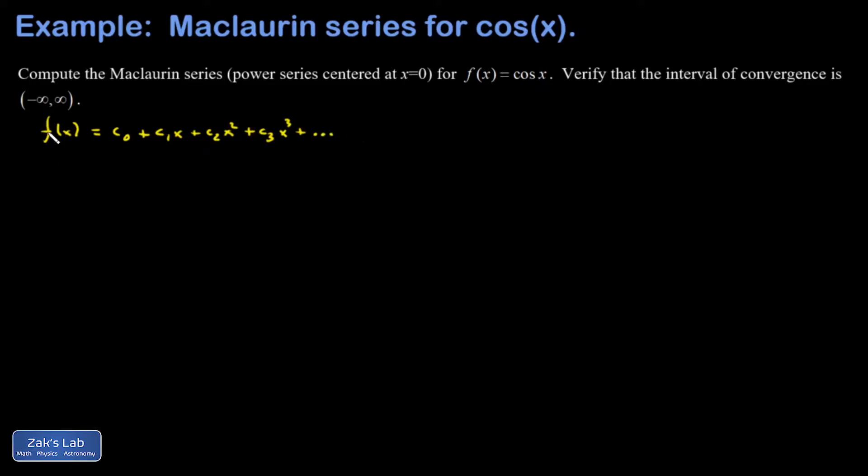It took a derivative trick to figure out how to get those coefficients, and the way it turned out was you can find those c's, the coefficients of the polynomial expansion, by taking the nth derivative of our function, evaluating it at zero, and dividing by n factorial.